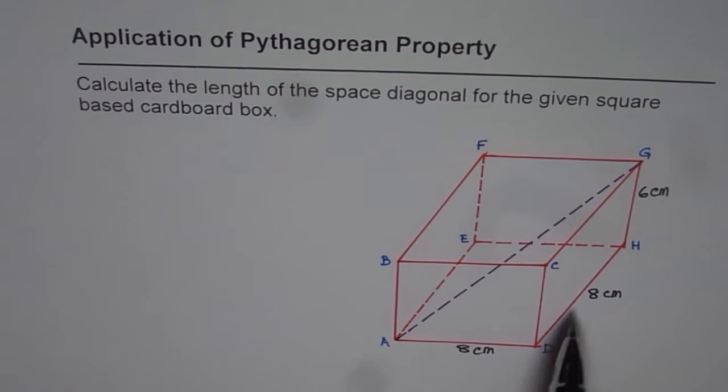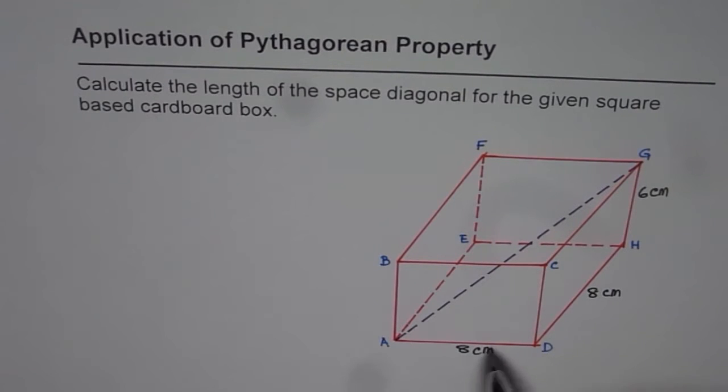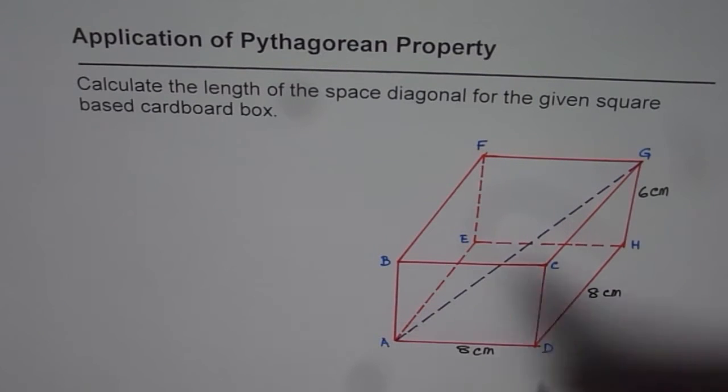Now this is a square based cardboard box, that means length and width of the base is same: 8 cm for this cardboard box. We need to find length of space diagonal, space diagonal is a diagonal from A to G shown here in the figure.